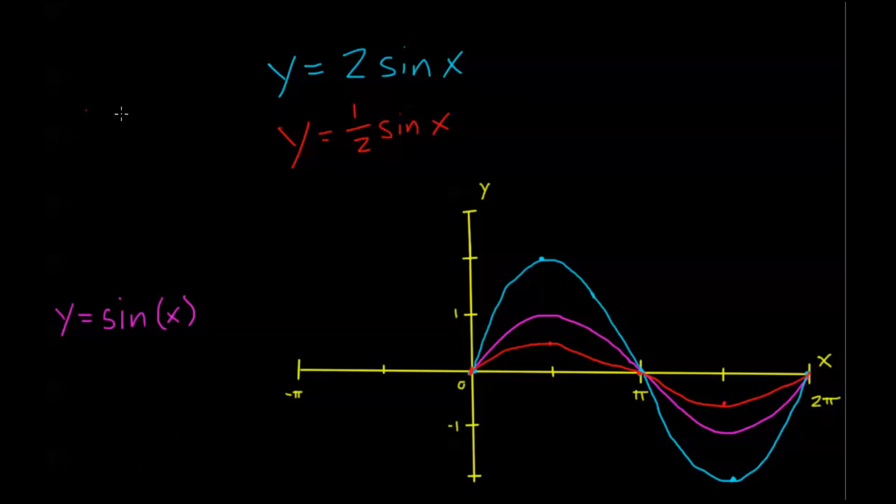Now, when we left off last time, I had said that this value right here, this value in front of these sine and cosine functions, is called the amplitude. And in general, if we have some function y equals a sine x or y equals a cosine x, where a is just some number, the absolute value of a is what we're going to call the amplitude of the function.